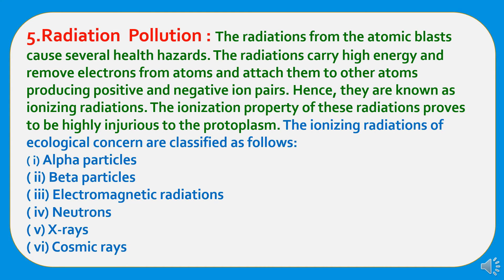The fifth type of pollution is radiation pollution. Radiations from atomic blasts cause several health hazards. They carry high energy and remove electrons from atoms, attaching them to other atoms and producing positive and negative ion pairs — hence they are known as ionizing radiations. The ionization property of these radiations is highly injurious to protoplasm. The ionizing radiations of ecological concern are classified as: alpha particles, beta particles, electromagnetic radiations, neutrons, X-rays, and cosmic rays.